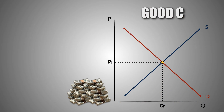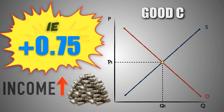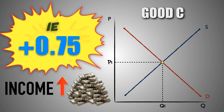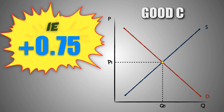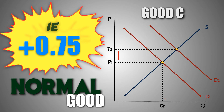Assume that this is the market for good C. Good C has an income elasticity coefficient of positive 0.75 and the consumer's disposable income increases. Because the income elasticity for good C is positive, we know that good C is a normal good. As a result, if the consumer's disposable income increases, the demand for good C, a normal good, will increase, causing the price of good C to increase and boosting the quantity of good C sold in the market.